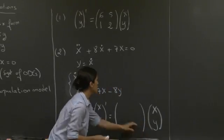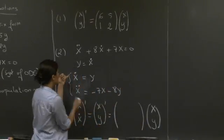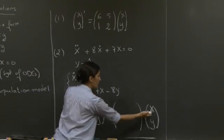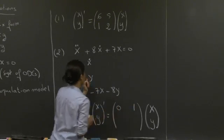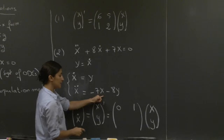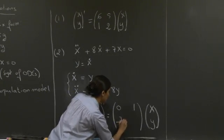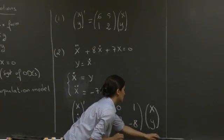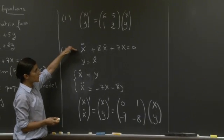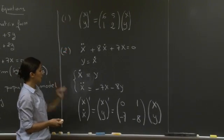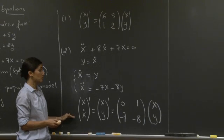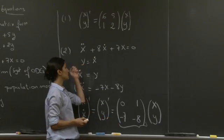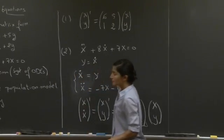Now we have to read off our system to find the coefficient of this matrix. So x dot equals y means that there is a zero coefficient in front of the x, a one in front of the y. x dot dot equals minus 7x, so we have a minus 7 multiplying the x, and a minus 8 multiplying the y. And so that's how we convert a differential equation, second order, into systems of differential equations in matrix form. This matrix would be referred to as the companion matrix of this differential equation. So that ends the second part.